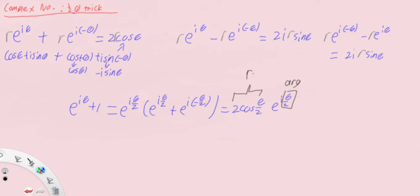Does this work if, say, I have e^(iθ) + 2? No, it doesn't. Because you'll get e^(iθ/2) times (e^(iθ/2) + 2e^(-iθ/2)), and you realize you can't use the trick anymore because the moduli are different. If you put it in polar form, you don't get cos(θ/2) anymore — you get something else. It's not entirely impossible, just very difficult.